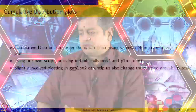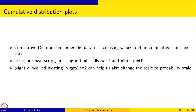The third way of presenting data is to give cumulative distribution plots. Here we order the data in increasing values, obtain the cumulative sum, and plot. There are several ways of doing cumulative distribution plots — you can use your own script or use built-in calls like ECDF or plot.ECDF. You can also do more involved plotting in ggplot, which allows changing the scale of the y-axis to a probability scale to assess whether the data follows a normal distribution.